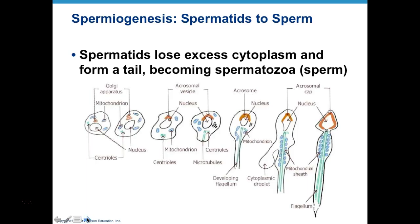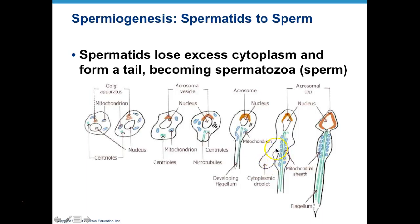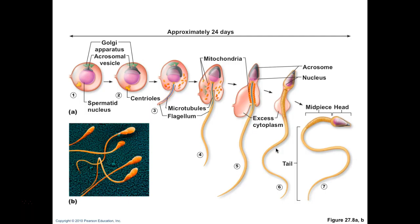In spermiogenesis, the spermatid needs to lose its cytoplasm and form a tail. You can see microtubules being added toward the end, with cell organelles and everything moving toward the head area. The mitochondria line up along the tail to supply energy and allow movement of the flagellum. The genetic material within the nucleus stays in the head of the sperm, and you can see the cytoplasm almost drooping off of the spermatid during this process.